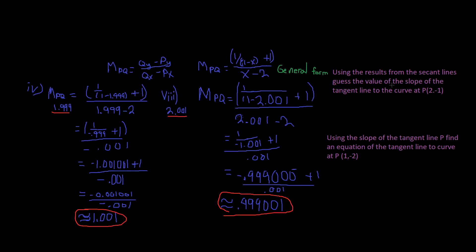The question asks us to use the results from the secant lines to guess the value of the slope of the tangent line to the curve at P(2, -1). Looking at x = 1.99 and x = 2.001, these values are converging to 1, so the slope of the tangent line is 1.